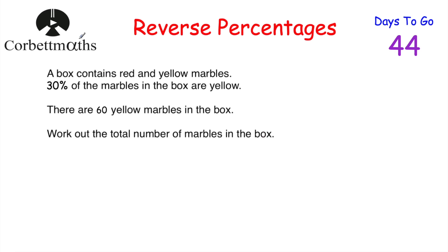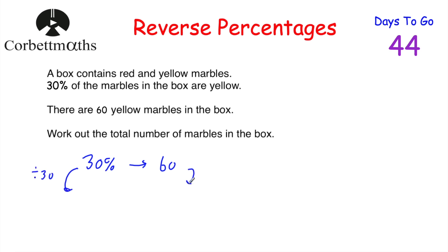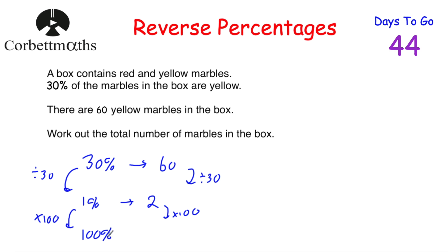Next question — this is a non-calculator question. A box contains red and yellow marbles, 30% of the marbles are yellow, and there are 60 yellow marbles. Work out the total number of marbles. Since 30% of the marbles are yellow and there are 60 yellow marbles, 30% equals 60. Divide both by 30: 1% equals 2. Multiply by 100: 100% equals 200. There are 200 marbles in the box.